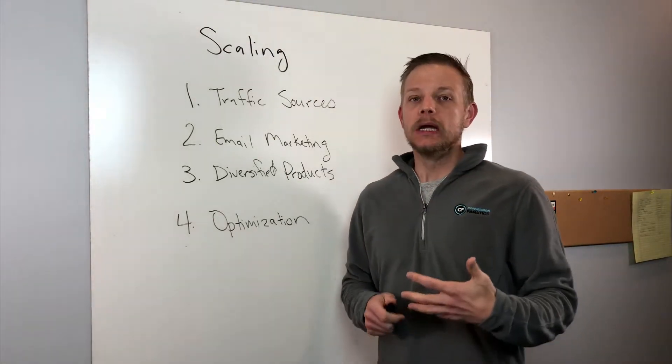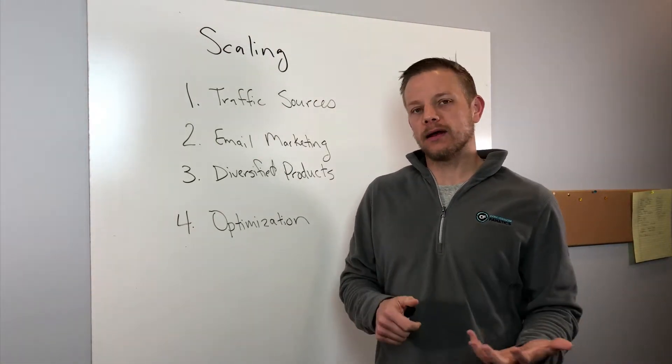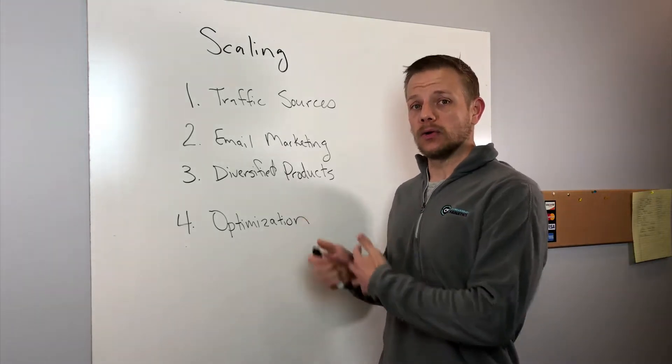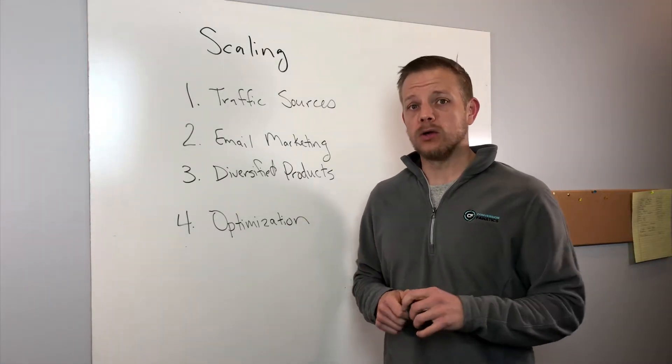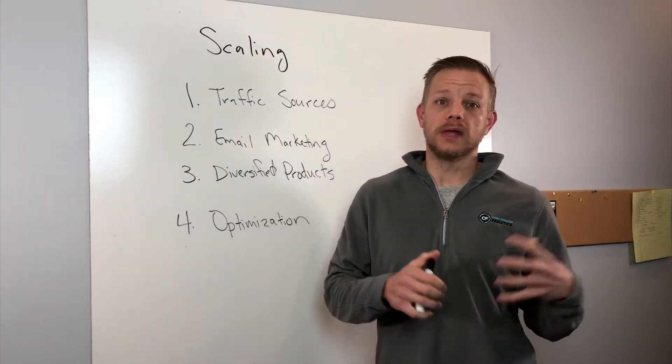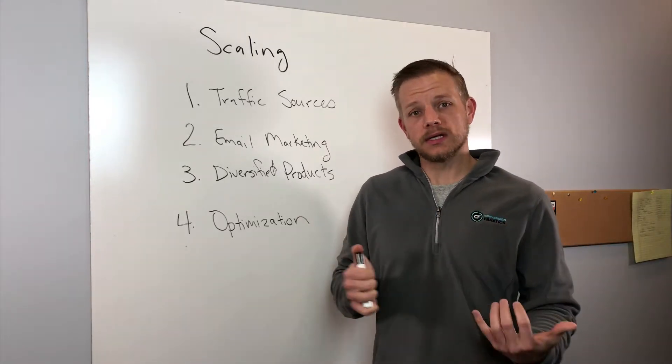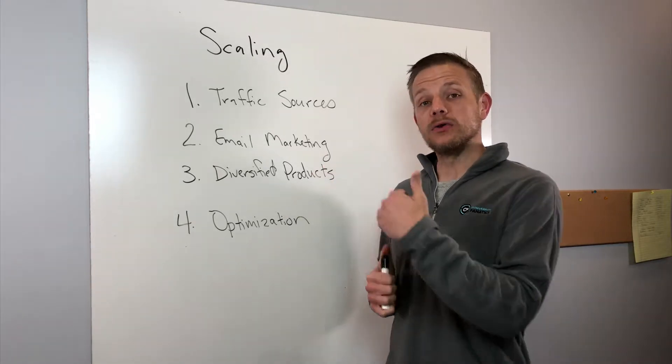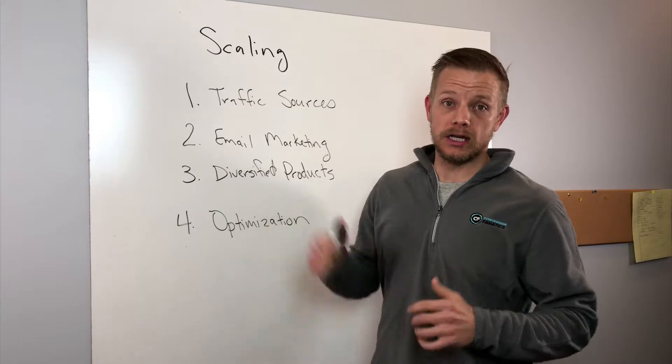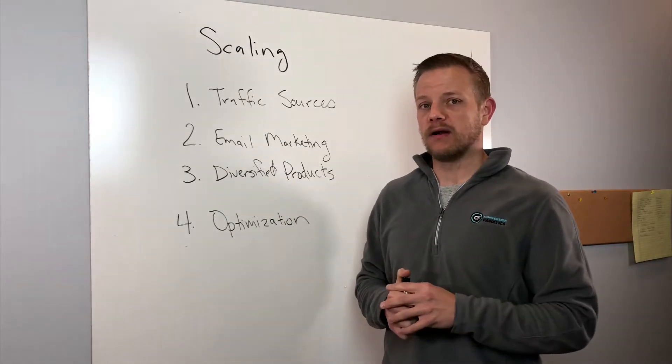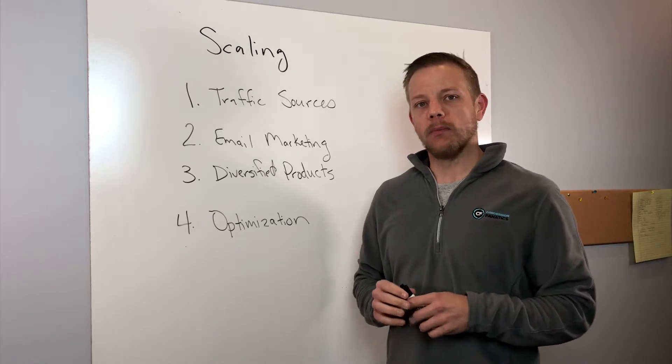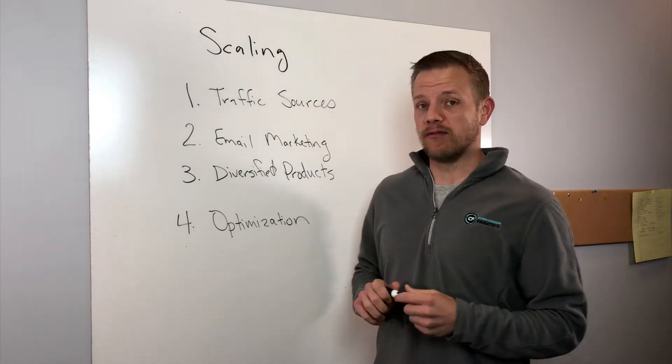You can offer more of the same, but you need to have supporting or secondary products or very relevant products that can help increase your average order value because the average order value allows you to then tweak your numbers and then get your cost per acquisition and actually spend more on acquiring a customer to help the scalability. And it opens up additional traffic sources when you maximize that average order value. And it's very hard to do it with a very limited number of products. So look for ways to diversify.